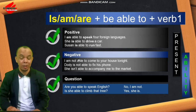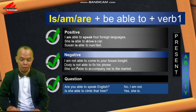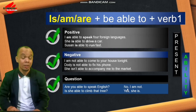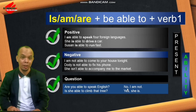Untuk kalimat negatif dengan 'be able to', kita cukup menggunakan 'not' setelah to be. Contoh: 'I'm not able to accompany you to the market.' Sedangkan untuk kalimat pertanyaan, kita letakkan is/am/are di depan subjek: 'Are you able to speak English?' / 'Is she able to climb that tree?' Cara menjawabnya sama seperti ketika kita menggunakan verb to be pada pelajaran sebelumnya.